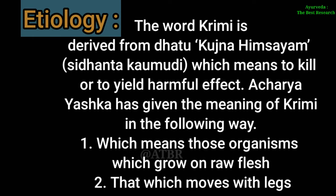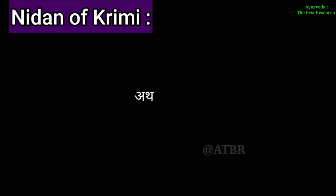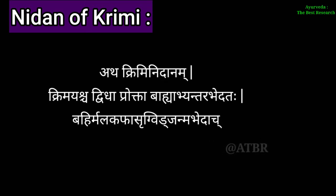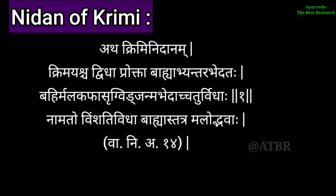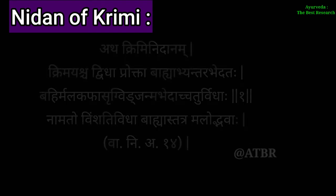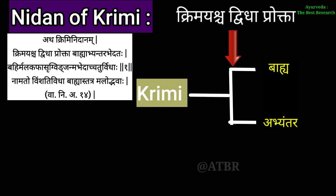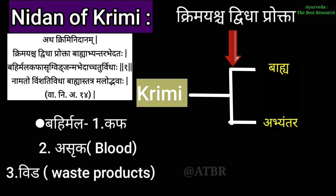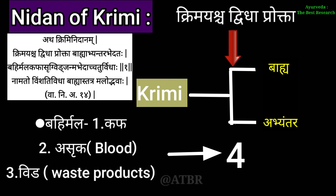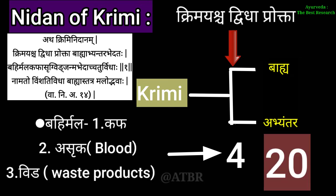Acharya Yastaka has given the meaning of Krumi as those organisms which grow on raw flesh and that which moves with the help of legs. Krumi is basically divided into two parts: Bhaiya and Abhyantara. But it also includes the Bhaiya Mala, that is external mal, in which kapha, ashruka (blood), and veta (waste products) are included. Because of that, it has totaled four types, but again they are divided and it has totaled 20 types.